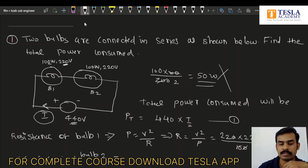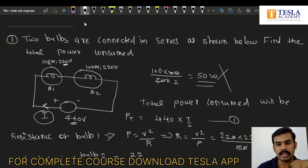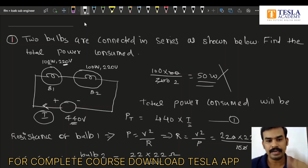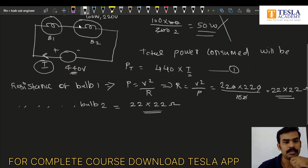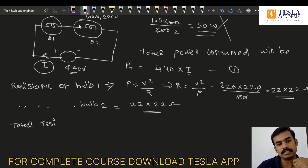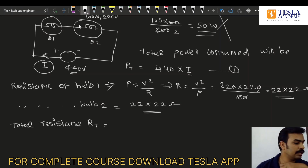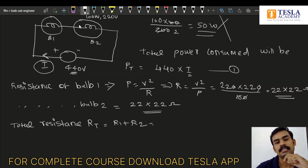Resistance of bulb B2: similarly, we have the same equation, same resistance — 22 into 22 ohms. Now, the total resistance in series: R total = R1 plus R2, which is nothing but 22 × 22 plus 22 × 22. Two bulbs in series, so total resistance is 2 × (22 × 22) ohms.